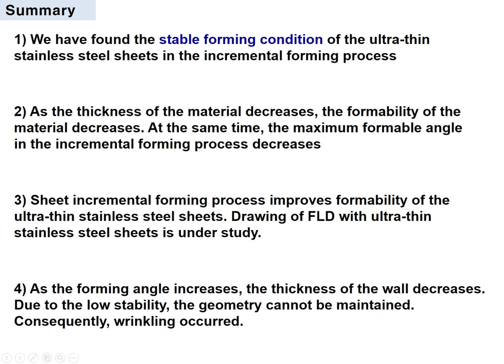To summarize: we found the stable forming conditions for ultra-thin stainless steel sheet in the incremental forming process. As the thickness of the material decreases, the formability decreases and the maximum formable angle decreases. The incremental forming process improves formability of ultra-thin stainless steel sheet beyond what is achievable in tensile testing. The drawing of the forming limit diagram with ultra-thin stainless steel sheet is under study. As the forming angle increases, the wall thickness decreases; due to low stability, the geometry cannot be maintained, and consequently, wrinkling occurs in the slope region.